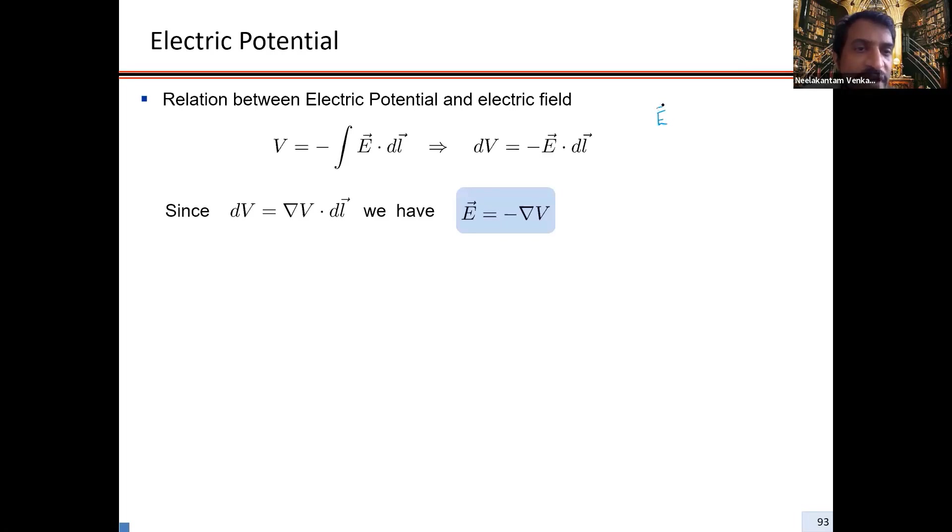Now that we know if an electric field is given, I can find my voltage to be negative infinity to R E dot DL. So given an electric field, I can find a voltage.